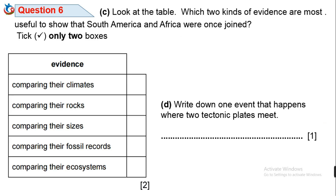Question 6c: Which two kinds of evidence are most useful to show that South America and Africa were once joined? Tick only two boxes. From the five options provided, the two best evidences are: 1. Comparing their rocks — similar rocks on the shelves of different continents would suggest the two continents were once joined. 2. Comparing their fossil records — very similar types of fossils of plants and animals would be found in both continents.